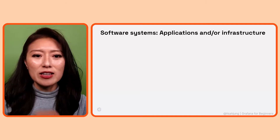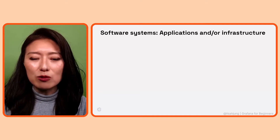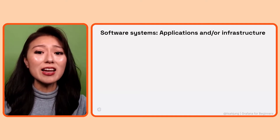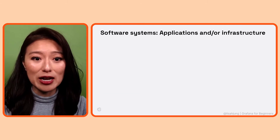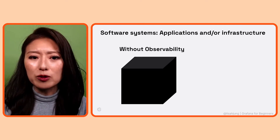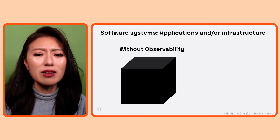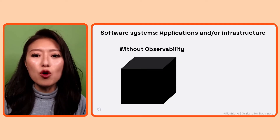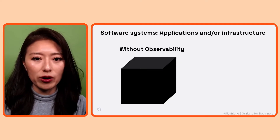Observability allows us to visualize what's going on within our software systems. Software systems could be an application and or an infrastructure that runs applications. And a system without observability is like a black box — we have no idea what's going on inside.